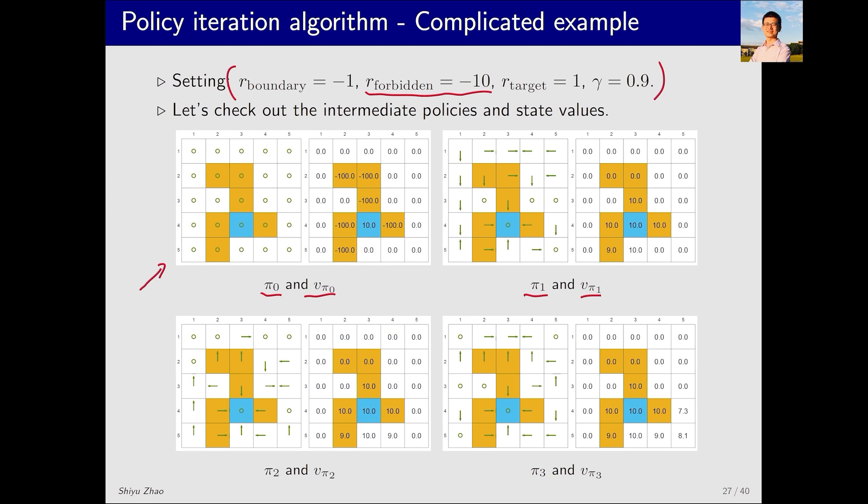During this process, there's actually an interesting phenomenon. What is it? Let's consider π0, which is a poor policy since it suggests staying still in every state. π1 is also not good in many states, but we notice improvements in policies for these states close to the target area. From π1 to π2, the policy of this state becomes better. As you can see, the policy here is not good since it moves right while moving left could reach the target area. Then, from π2 to π3, the policy of this state improved again because it was moving upwards here, and now moving left can reach the target area.